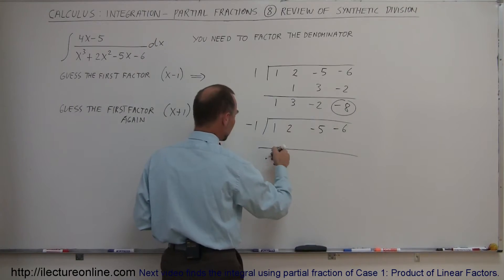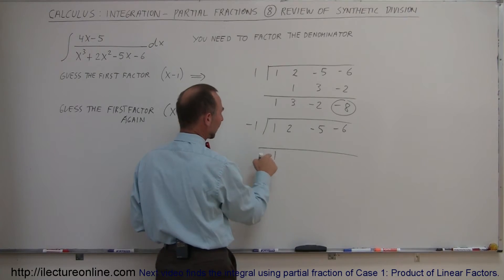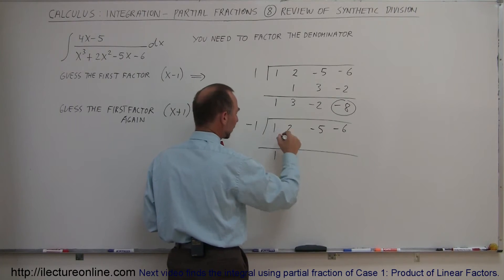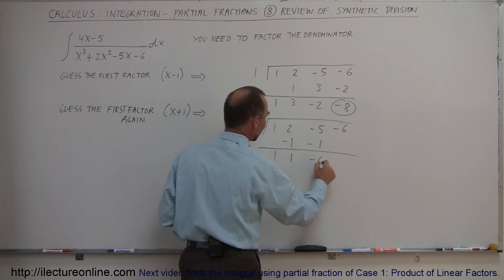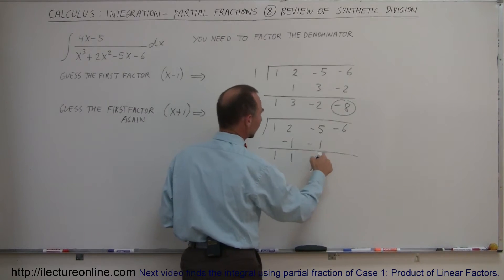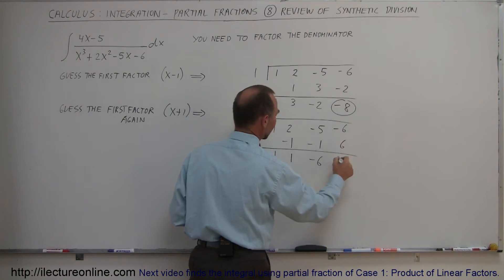Again, you draw a line down here, you drop down the 1. Negative 1 times 1 is a negative 1, add those together, you get a positive 1. Negative 1 times this is a negative 1, add those together, you get negative 6. Negative 1 times a negative 6 gives you a positive 6, add those together, you get 0.